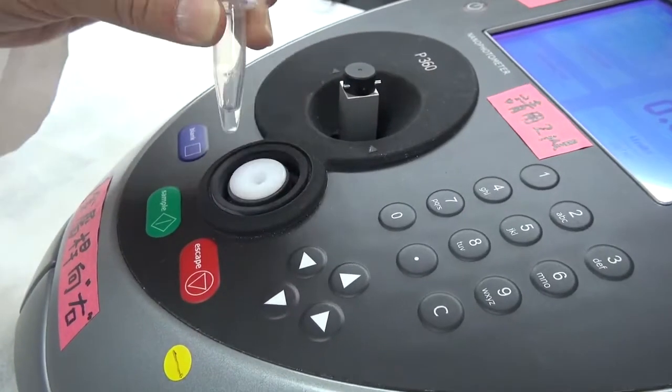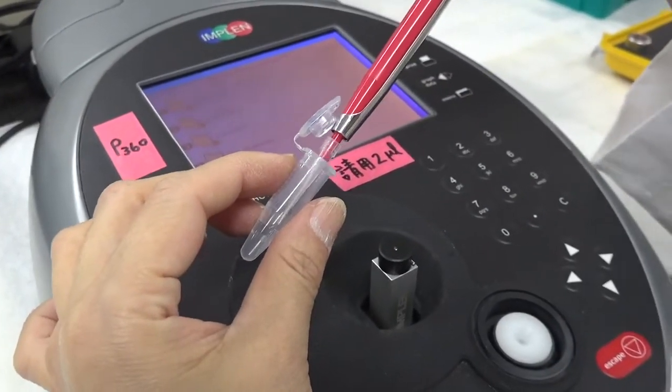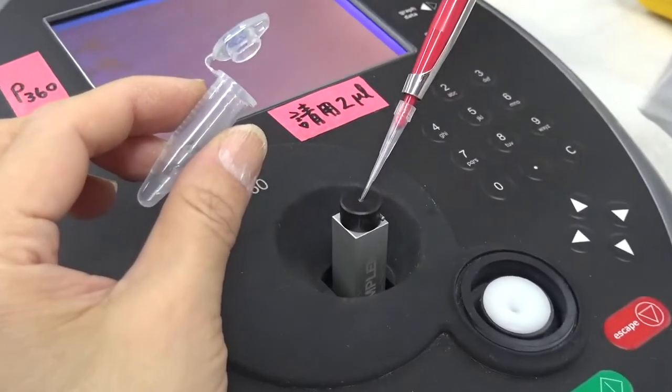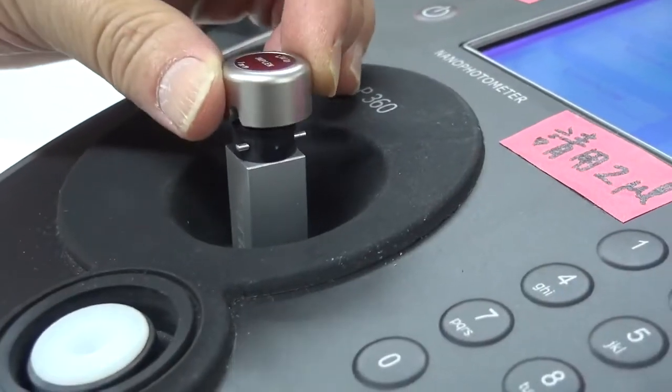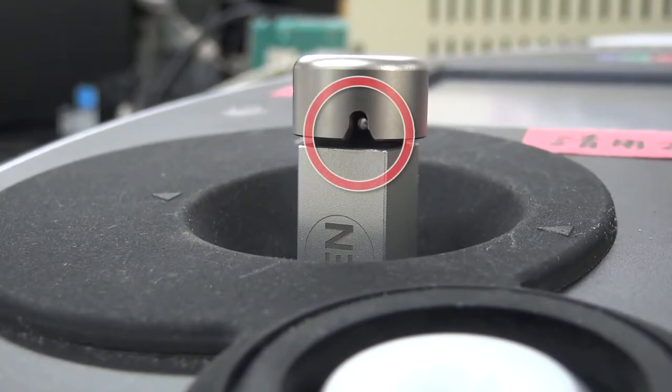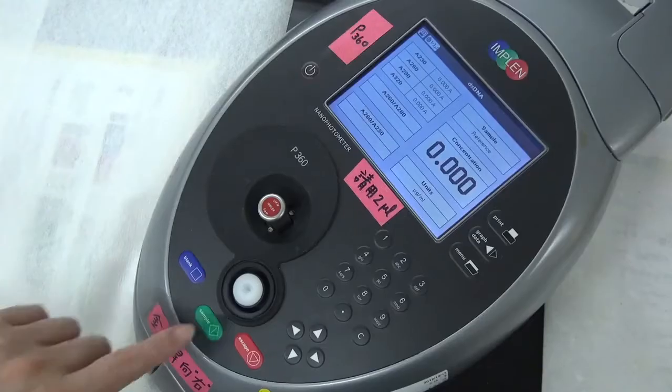12. Mix the sample solution by vortexing. Pipette 2 µL sample into the sample well of the cuvette. Avoid any bubbles. 13. Put the lid on. Make sure the notch of the lid perfectly sits on the metal bar to form a closed space.